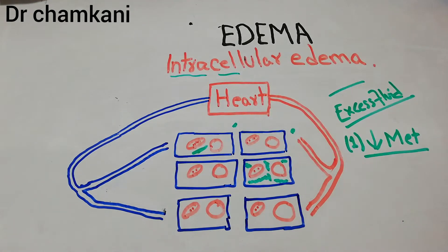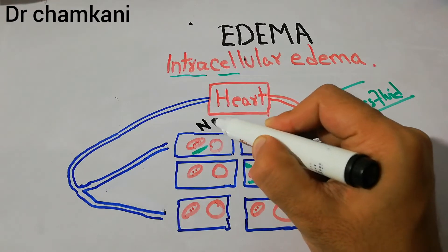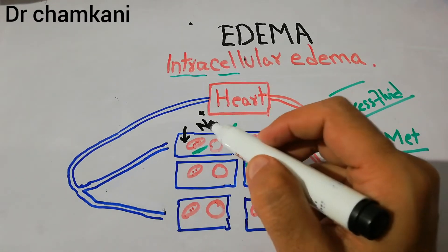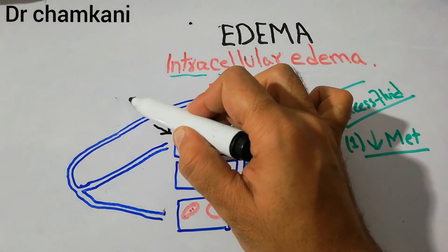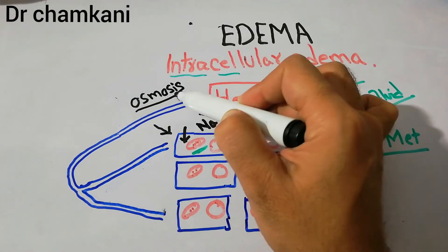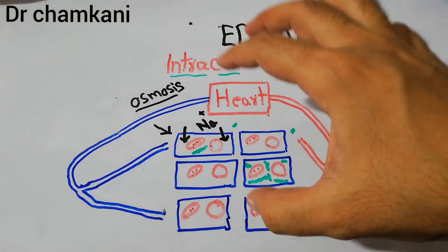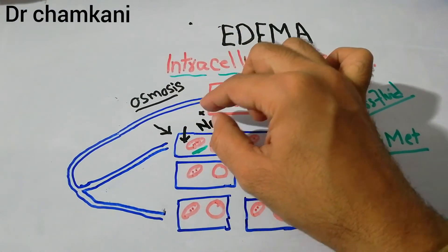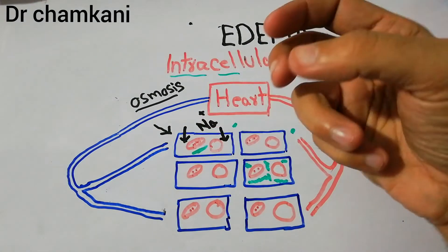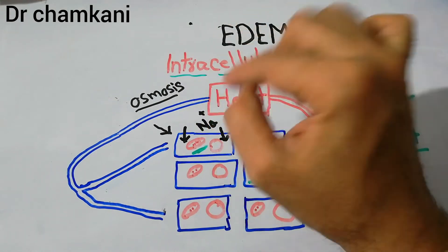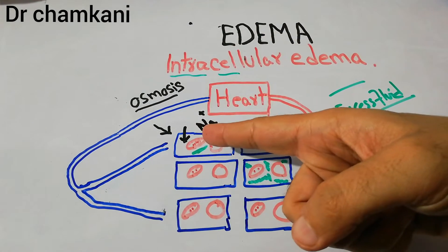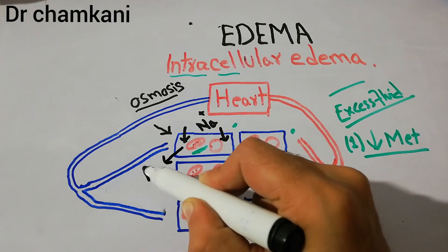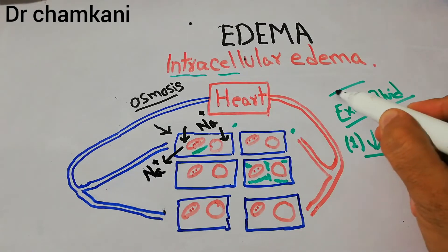Normally, sodium outside the cell drifts inside the cell, and once sodium enters, it brings water with it because of osmosis. Osmosis is the movement of water from an area of high water concentration to an area of low water concentration through a semi-permeable membrane — or equivalently, from an area of low solute concentration to an area of high solute concentration. Normally, metabolic activities, including the sodium-potassium pump, throw the sodium back out, so there is no excess fluid collection inside the cells.